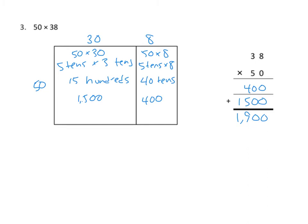That shows us how we can use the area model to make a more complicated problem like this into two somewhat simpler problems, 50 times 30 and 50 times 8. And the vertical way shows that we can do those same partial products in the vertical method that we did with partial products.